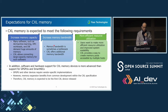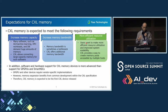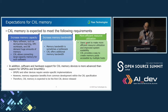The next requirement is increasing memory bandwidth. Memory bandwidth is sometimes a bottleneck, so CXL offers additional memory bandwidth. More efficient resource utilization is also necessary. Users want to make more efficient resource utilization and improve system scalability. CXL provides a way to create memory pools accessible by multiple hosts. Additionally, software and hardware support for CXL memory devices is more advanced than support for GPGPUs and SmartNICs, which require vendor-specific implementation.